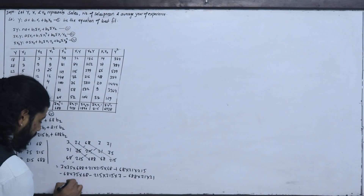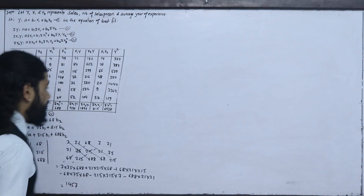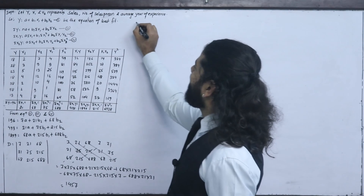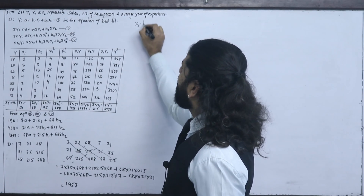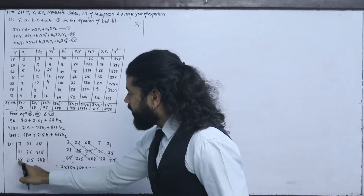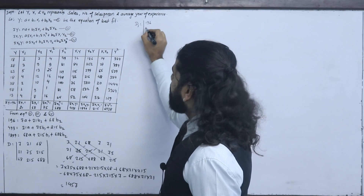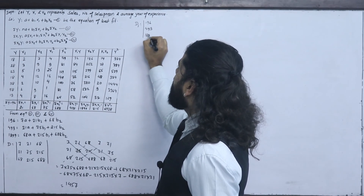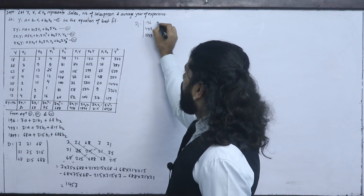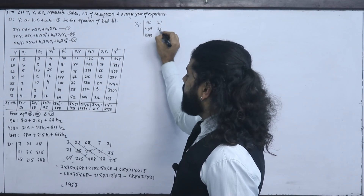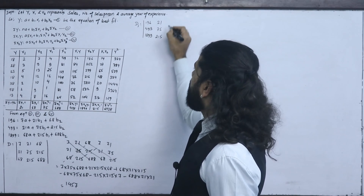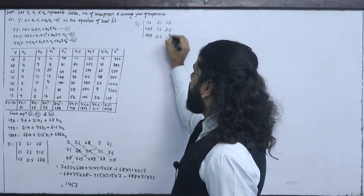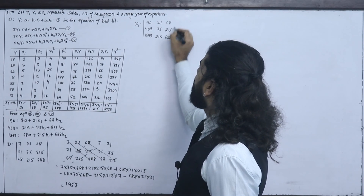This value of D is equal to 1457. Now we have D1. D1 is equal to the first column replaced: 1964, 931, 899. The values are 21, 75, 215, 68, 215, 688.